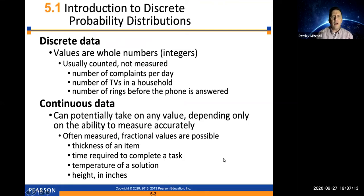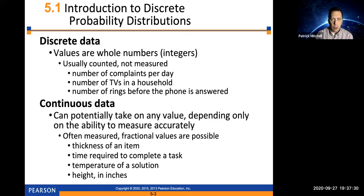We talked about this back in Chapter 1 — the difference between discrete data and continuous data. Remember that discrete data values are whole numbers, usually answering the question 'how many' as opposed to 'how much.' So these are things that can be counted, like number of complaints per day, number of TVs in a household, or the number of rings before the phone is answered.